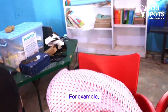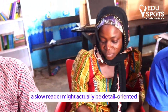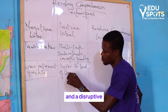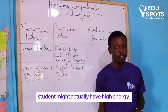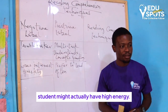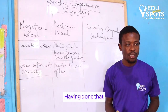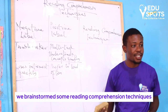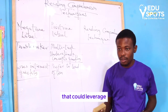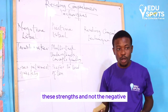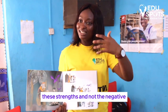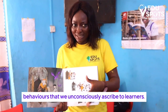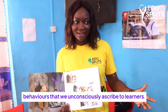For example, a slow reader might actually be detail-oriented, and a disruptive student might actually have high energy. Having done that, we brainstormed some reading comprehension techniques that could leverage these strengths and not the negative behaviors that we unconsciously ascribe to learners.